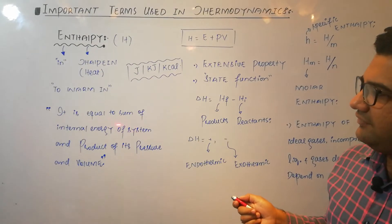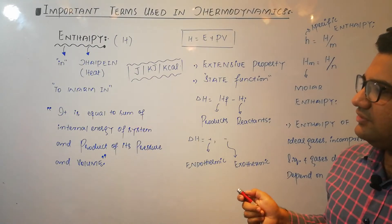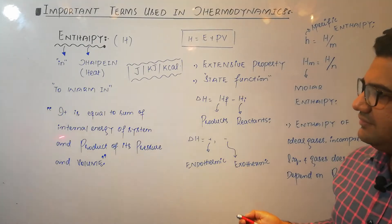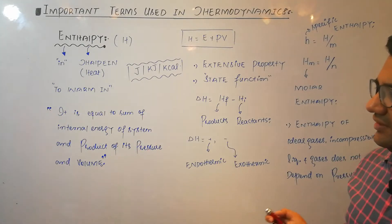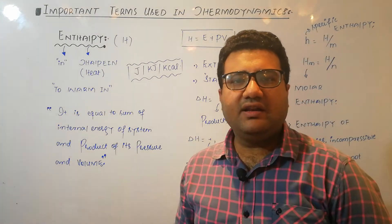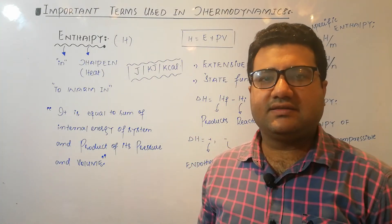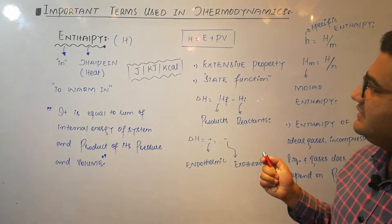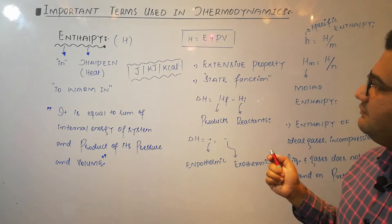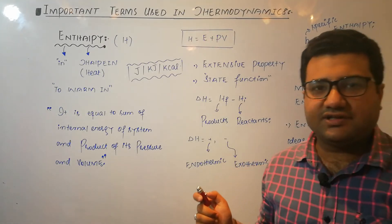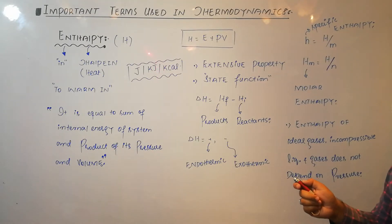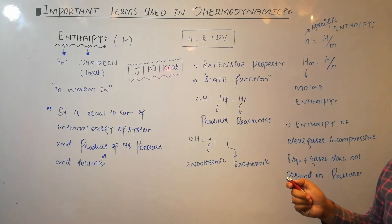There is another way to define enthalpy based on its formula. It is equal to the sum of internal energy of the system and the product of its pressure and volume. Internal energy is the energy required to create the system. So H equals E plus PV. The units to measure enthalpy are joules, kilojoules, or kilocalories.